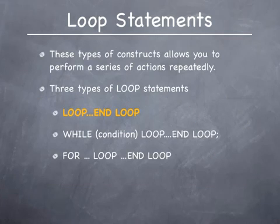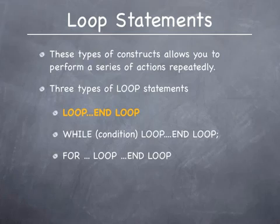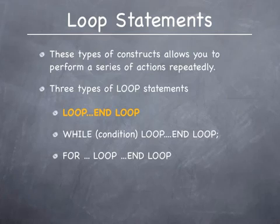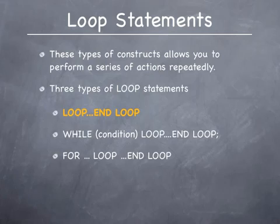In PL/SQL we have three types of loop constructs. All of them are used to perform a series of actions repeatedly. There is the basic loop, which begins with the word loop and ends with the words end loop semicolon. The second is the while construct. The while construct is followed by a condition that must be true to enter the loop. The while loop is also terminated with an end loop. The third type of loop statement is the for loop. The for loop also ends with the words end loop, and you can use one of these or some of them even interchangeably, depending on your program.